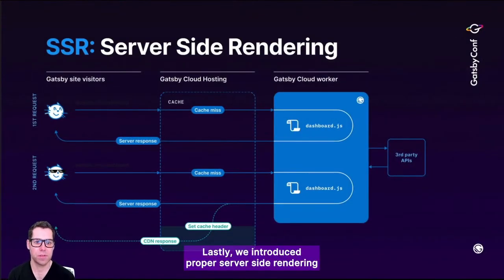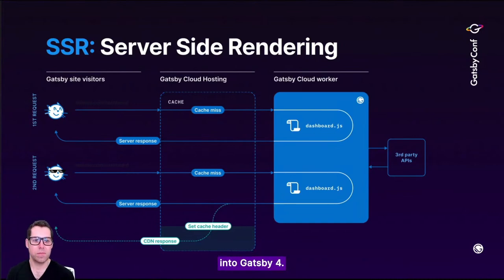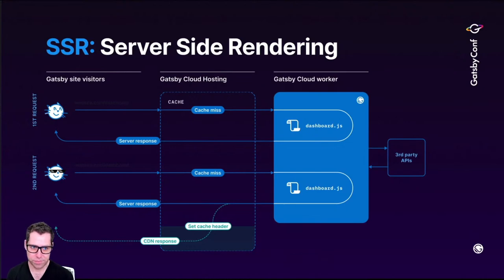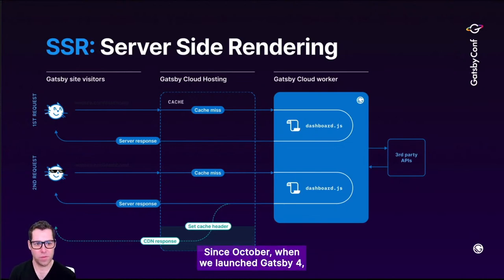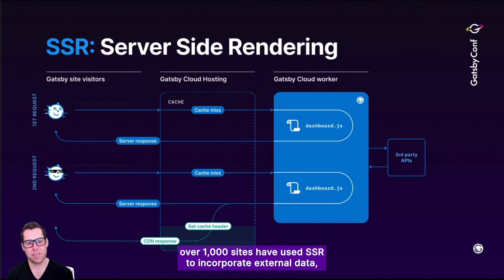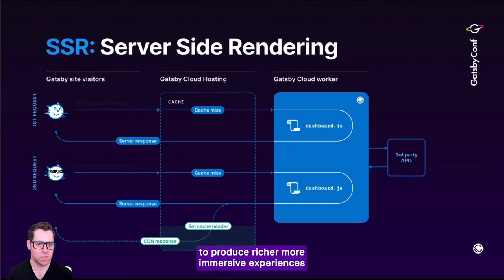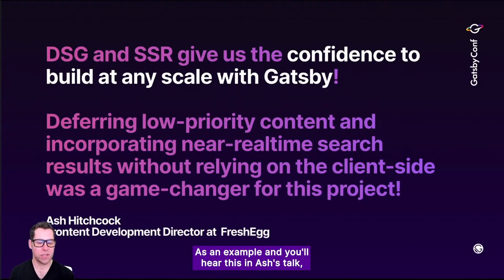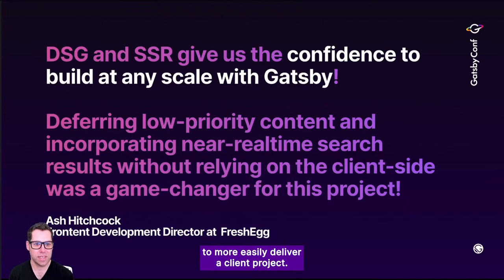Lastly, we introduced proper server-side rendering into Gatsby 4. This was the most requested addition to Gatsby, according to a survey I shared at last year's Gatsby Conf. We heard you, and we delivered. Since October when we launched Gatsby 4, over 1,000 sites have used SSR to incorporate external data to produce richer, more immersive experiences for their visitors. As an example — and you'll hear this in Ash's talk — Ash incorporated DSG and SSR from Gatsby 4 to more easily deliver a client project.